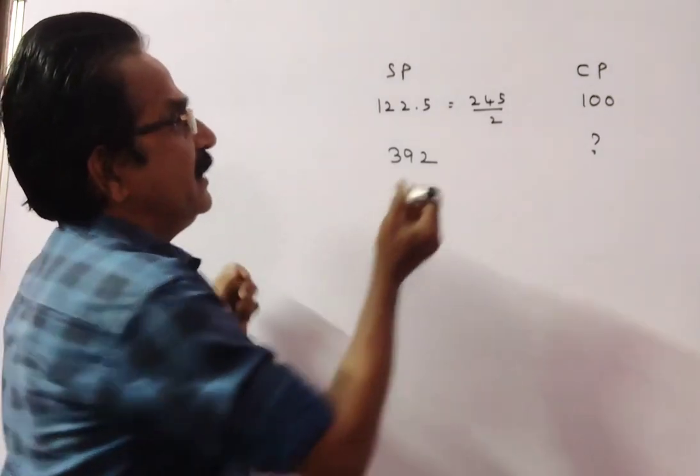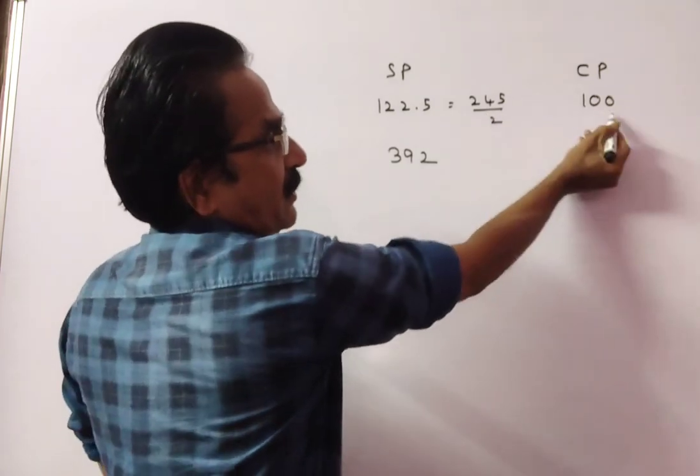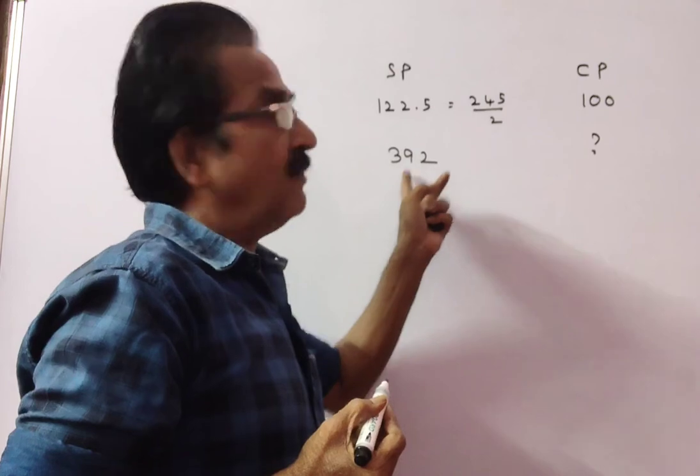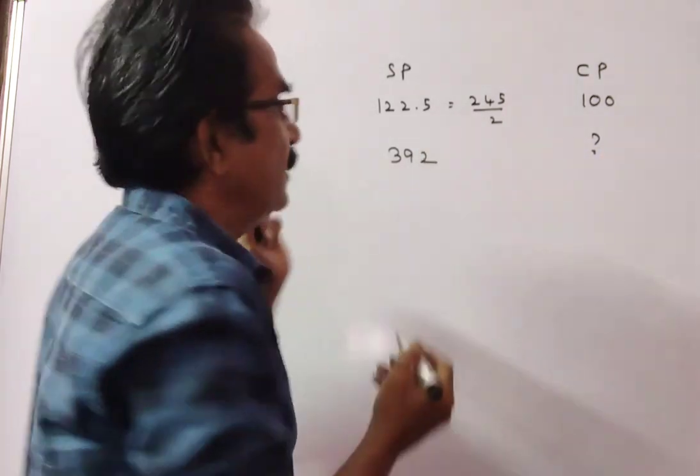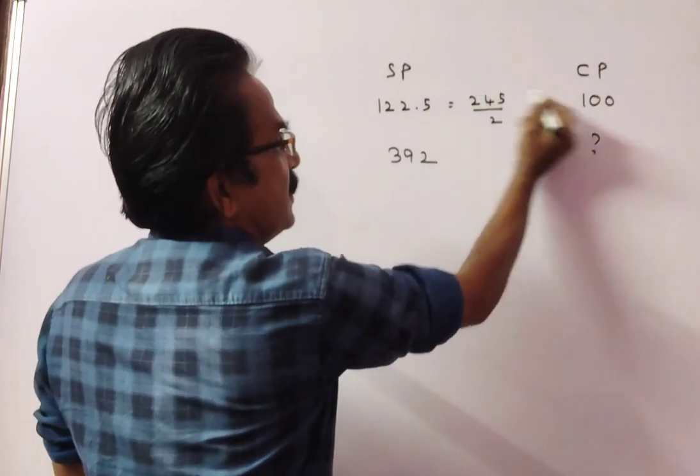Friends, if this is the selling price, the cost price is 100. If this is the selling price, what is the cost price? So, this is a directly proportional problem, this by this into this.